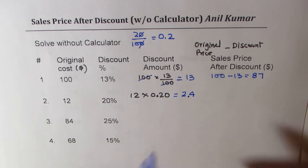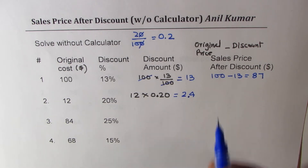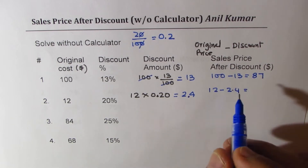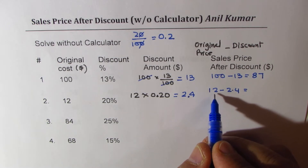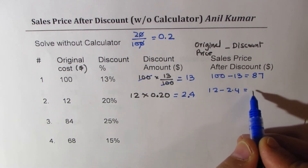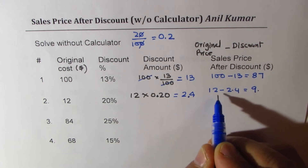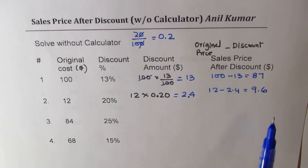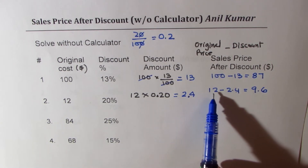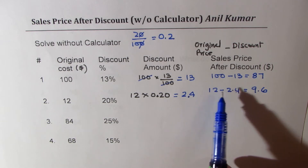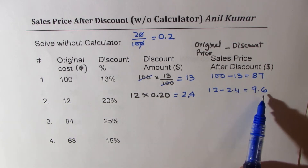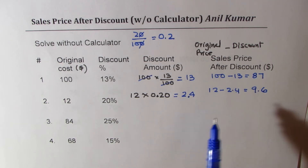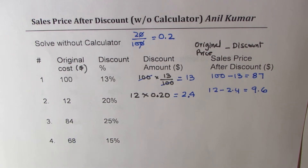So we do 12 minus 2.4. Take away 1 from 12, leaving 11. Then 11 take away 2 is 9, and 10 take away 4 is 6, giving us 9.6. We're splitting 12 into 11 and 1 — from 1 we took away 0.4 to get 0.6, and from 11 we took away 2 to get 9. It's a borrowing approach.